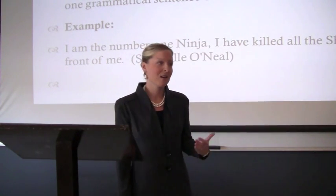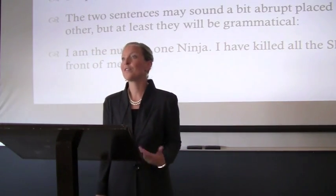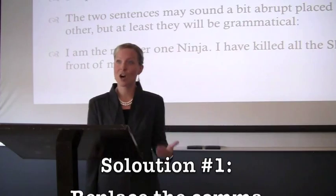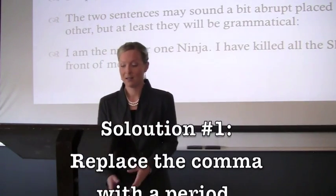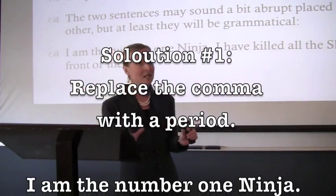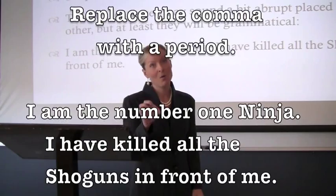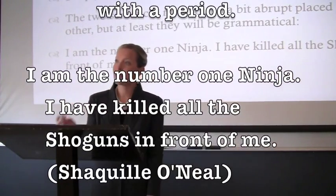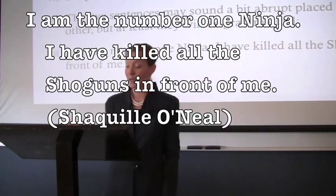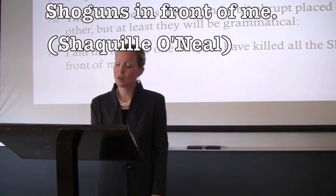So how do you fix a comma splice? There are four ways to do so. The first one is the easiest — you just replace the comma with a period. These two sentences are independent clauses; they can stand on their own, so separate them with a period. Sometimes the sentences will seem abrupt placed next to one another, but it is the easiest thing to do to fix your comma splice.